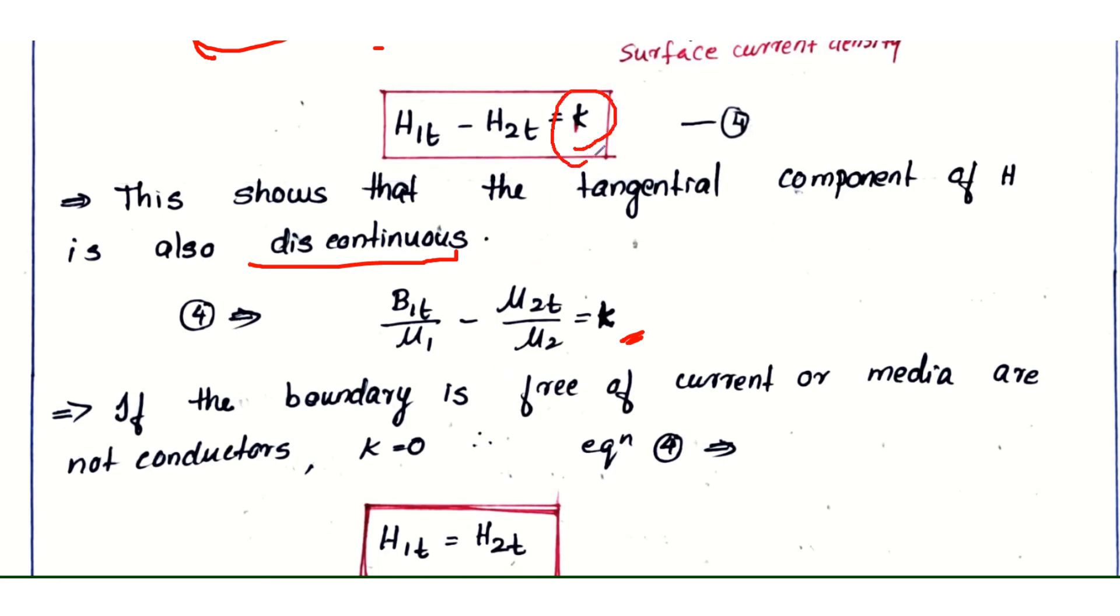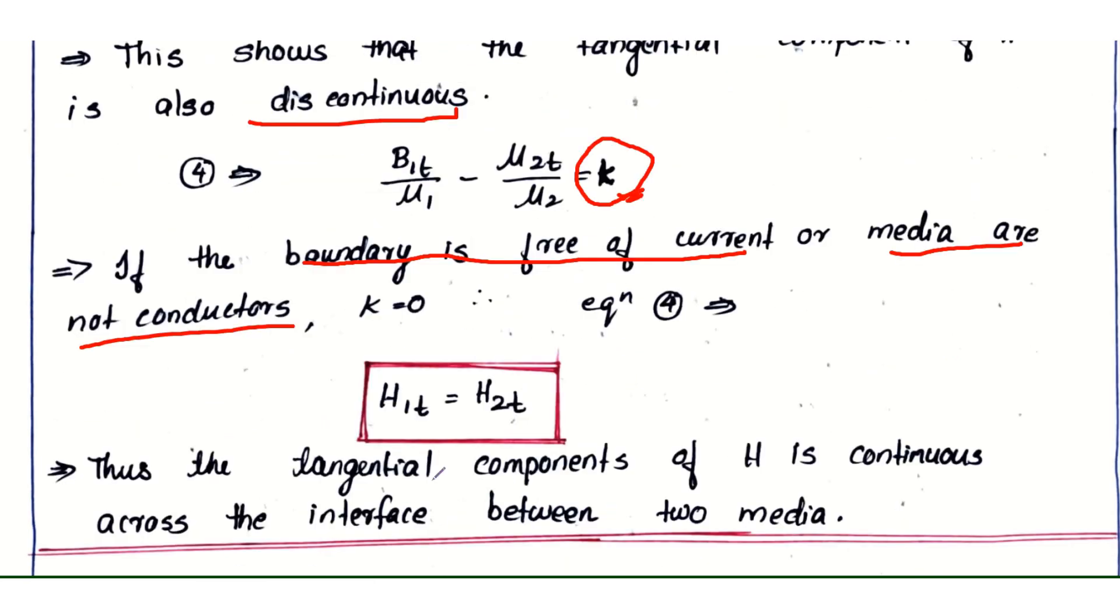Now, if we are considering k = 0, or our boundary is free of current, if there is no current density, that means the media are not conductors. Then k = 0, so H₁ₜ - H₂ₜ = 0. Therefore, this equation 4 will become H₁ₜ = H₂ₜ.